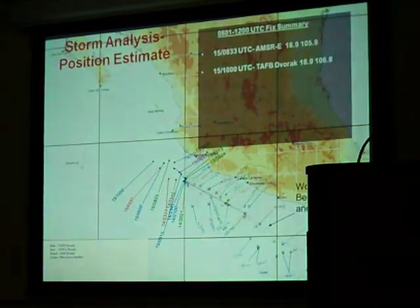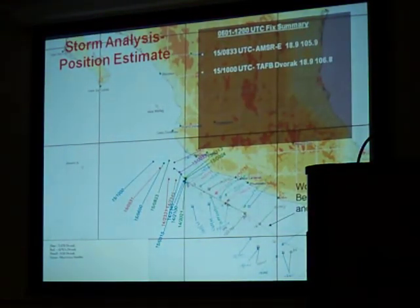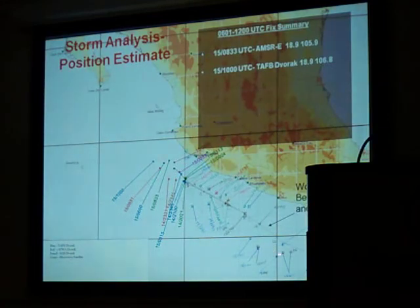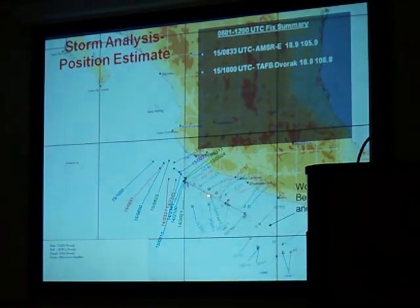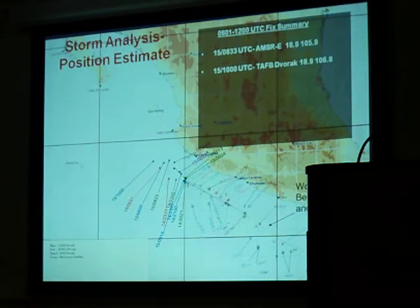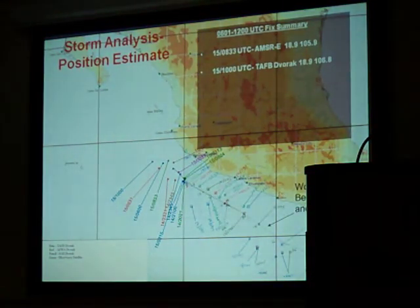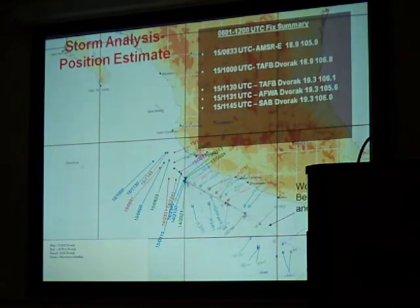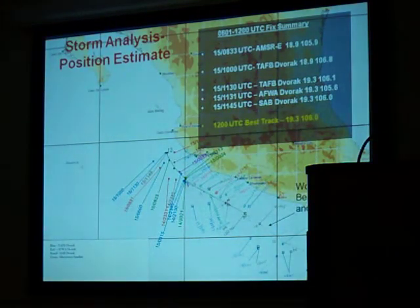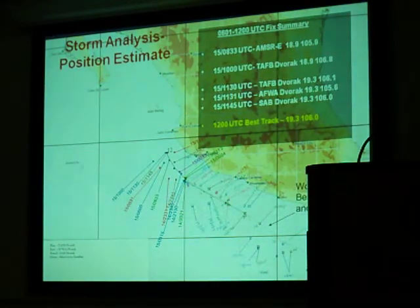We still use a regular map at the hurricane center to plot all the position estimates given to us by the various satellite agencies. In this example of an East Pacific storm, early on the fixes are all over the place with quite a bit of scatter, but the track was determined somewhere away from some of the position estimates. As the storm becomes better defined, the position estimates line up more closely. We also include microwave fixes. We have Dvorak classifications from TAP-B, SAB, and an AMSR-E microwave image, and the best track position is ultimately determined at synoptic time.